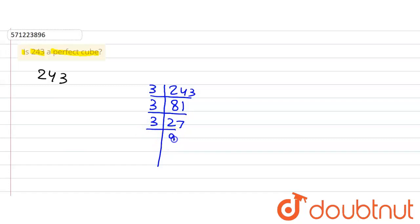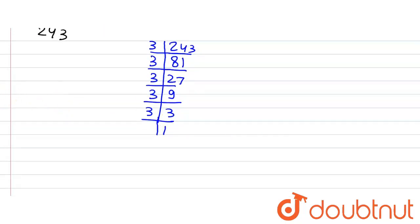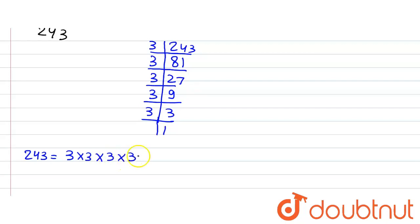Again, divided by 3: 3 multiplied by 9 is 27, 3 multiplied by 3 is 9, 3 multiplied by 1 is 3. So 243 can be written as a product of its prime factors: 243 = 3 × 3 × 3 × 3 × 3 × 3.